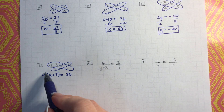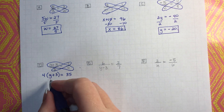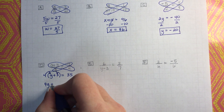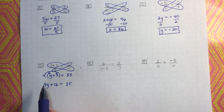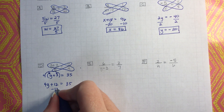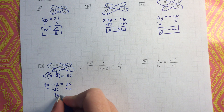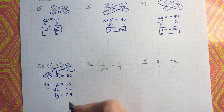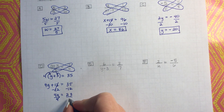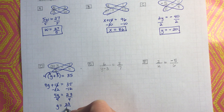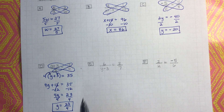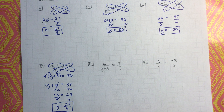I think what I'm going to do is try the distributive property. 4 times G is 4G, and 4 times 3 is 12, equals 35. Then we want to get G by itself, so we have to get rid of this 12 first — subtract 12 from both sides. That cancels, and we're left with 4G equals 23. Then divide both sides by 4, and we end up with G equals 23 over 4, which is a fraction, and that's totally fine.